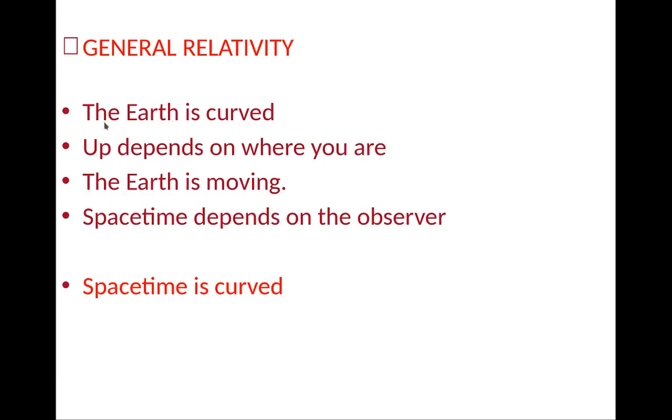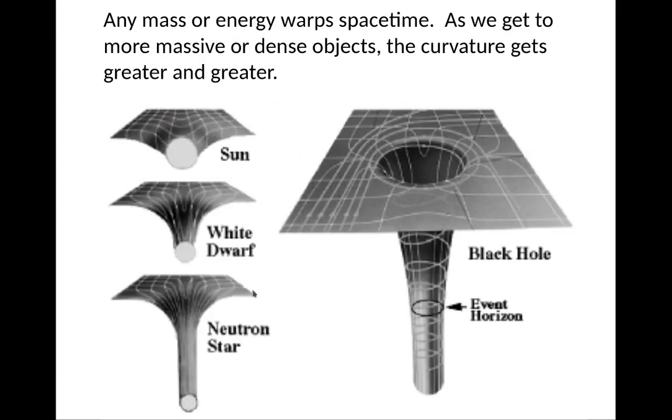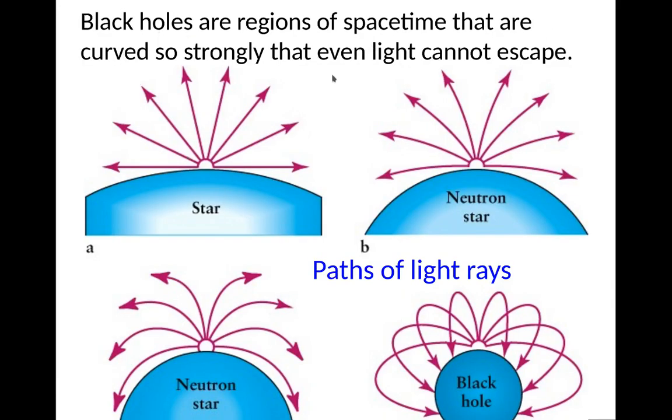So here's general relativity. Earth is curved, up depends on where you are, Earth is moving, spacetime depends on the observer, and spacetime is curved. So any mass or energy warp spacetime. As we get to more mass and dense object, the curvature gets greater. So that's the sun, a white dwarf has larger curvature, a neutron star has larger curvature, and black hole has such a large curvature that, in fact, basically it generates what's known as the event horizon, at least as we talked about earlier. So black hole is a region in spacetime that curves so strongly light cannot escape, so light travels in straight lines, but if you curve it so strongly that all straight lines basically lead back to itself.